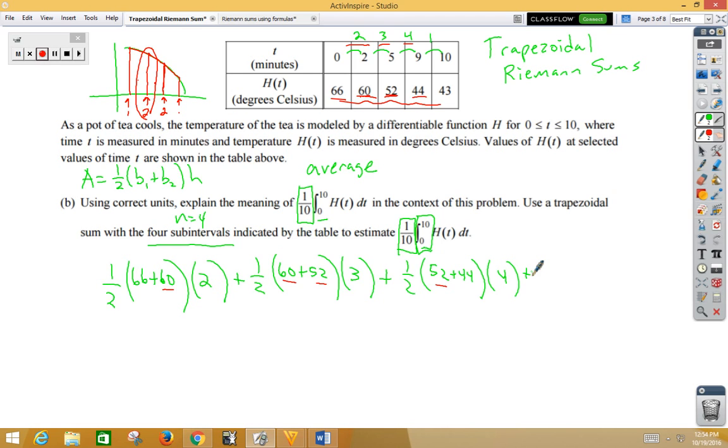Our final trapezoid, 1/2. Our 44 gets used again twice. And then our 43, our final one, is used once. We're going to add all that up. If they give you a calculator, throw it in your calculator to get the value. And then when you get done, make sure that you multiply all of it either by 1/10 or you divide by 10.